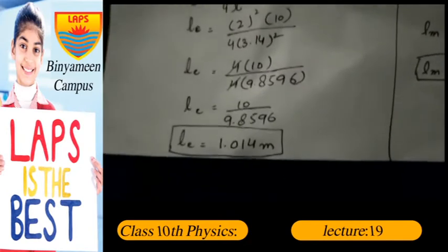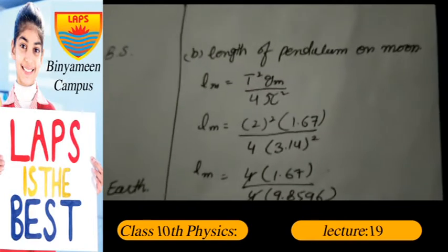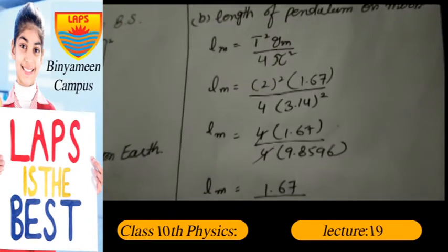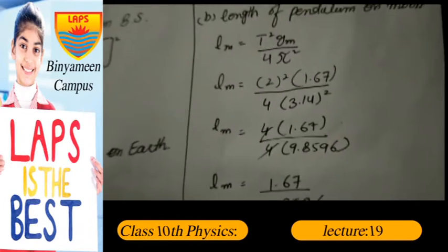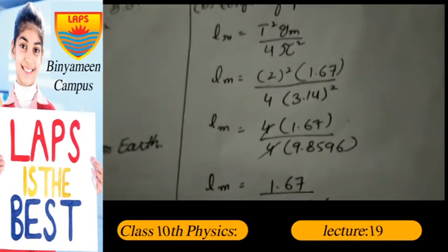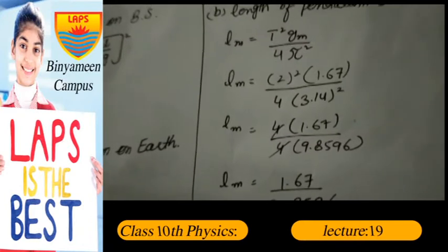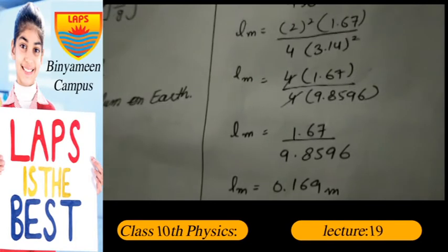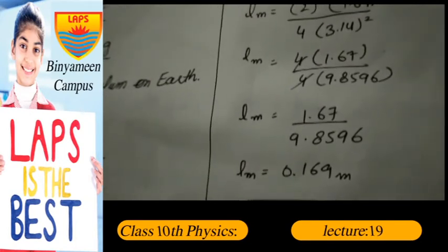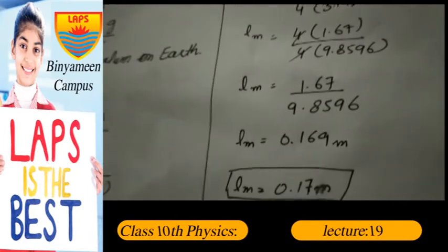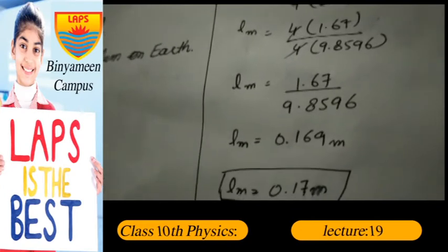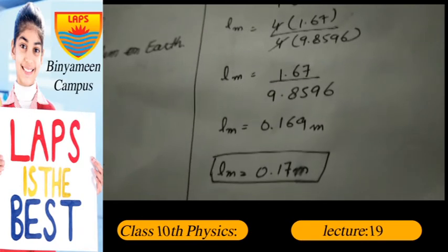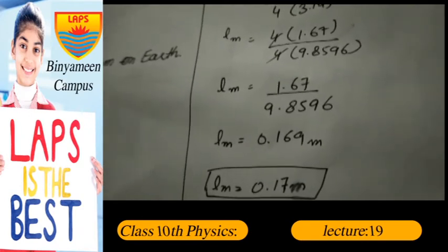Part B: Length of the pendulum on the Moon. l_m = T² × g_m / (4π²). Substituting the values: l_m = (2)² × 1.67 / (4 × 9.8596) = 6.68 / 39.4384. Dividing, the length of the pendulum on the Moon is equal to 0.169 meters.